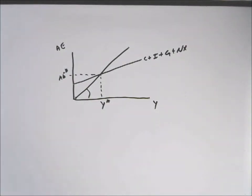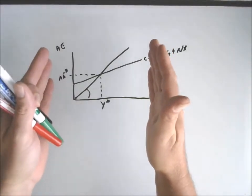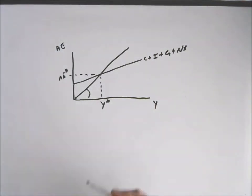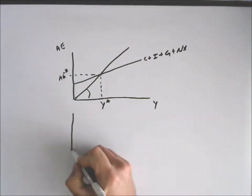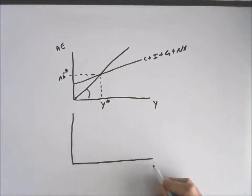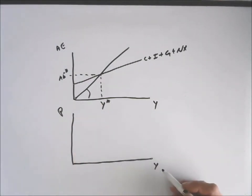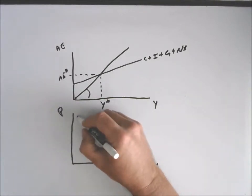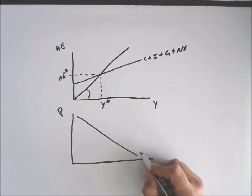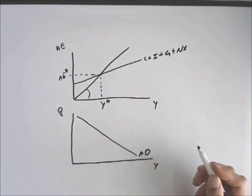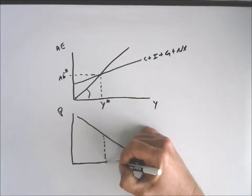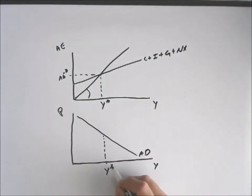And we then take this graph and connect it to aggregate demand, precisely through real GDP. So remember, this is the general price level, this is real GDP on the horizontal axis, and we have a demand curve—this is aggregate demand.